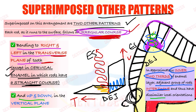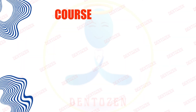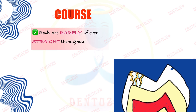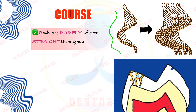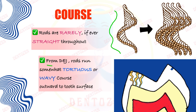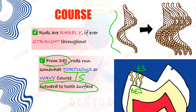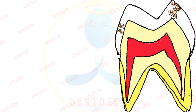Enamel rods are rarely straight throughout their course. This path is described as wave-like. The term used to describe the course of enamel rods from the dentino-enamel junction to the tooth surface is tortuous, wavy, sinusoidal, or undulated. This is an important viva question.